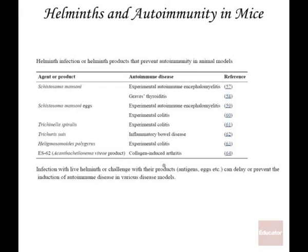There is very recent work on helminth infection and autoimmunity in animal models, most notably in mice. Thyroiditis and Graves' disease are protected by schistosoma — schistosoma eggs are protective for autoimmune encephalomyelitis and colitis. Trichuris is protective for inflammatory bowel disease and experimental colitis. Another species is protective for collagen-type arthritis. This work has not yet been performed in a phase three clinical trial environment, but these results are certainly suggestive.